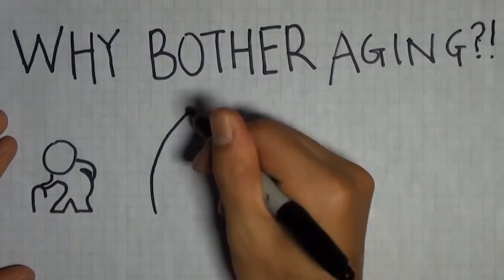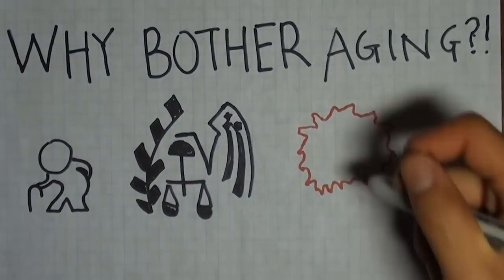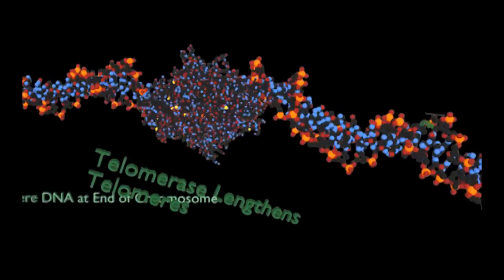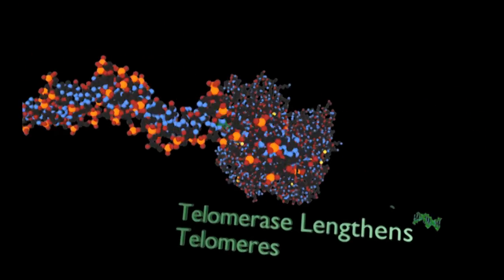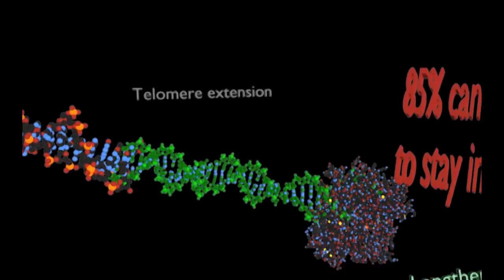It would be nice if we could live forever, but we live in an imperfect world where there's things like getting old, taxes, and cancer. Speaking about cancer, this is what goes on in a cancer cell. Cancer cells use an enzyme called telomerase to extend their telomeres and become immortal.